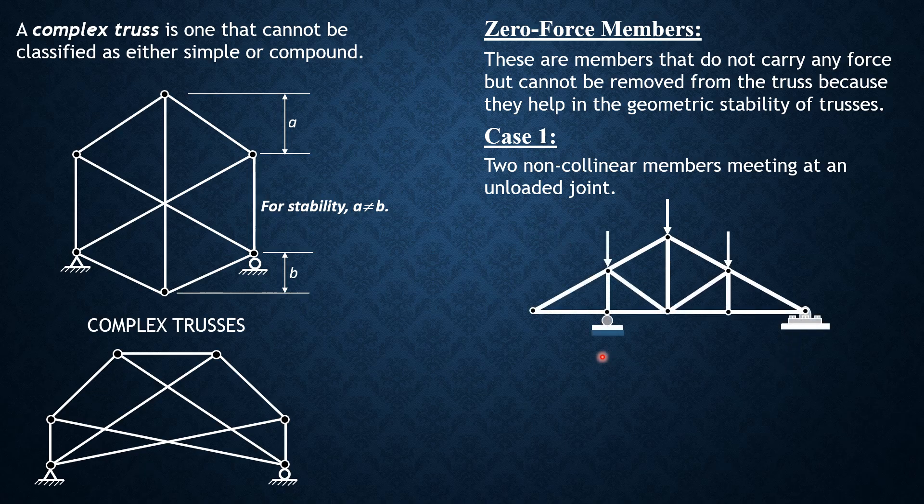For instance, in this truss here, there are only two forces and they are not collinear. Therefore, each is zero. The proof is: if you sum up forces vertical, the vertical component of this force plus nothing equals zero, so therefore this is zero. If this is zero, summation of forces horizontal, then the other member is also zero. It's easy to locate when there are two members meeting at an unloaded joint and they are not collinear.